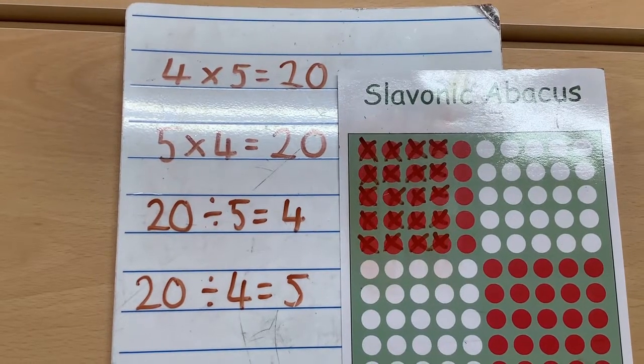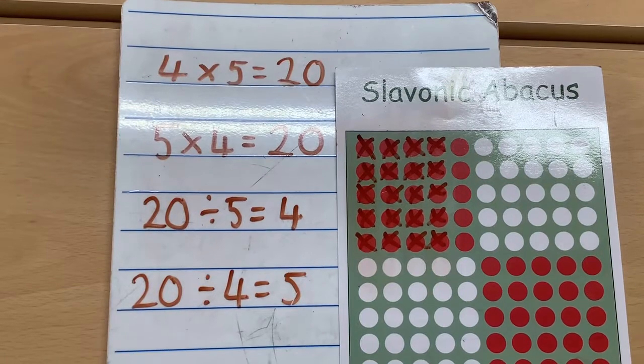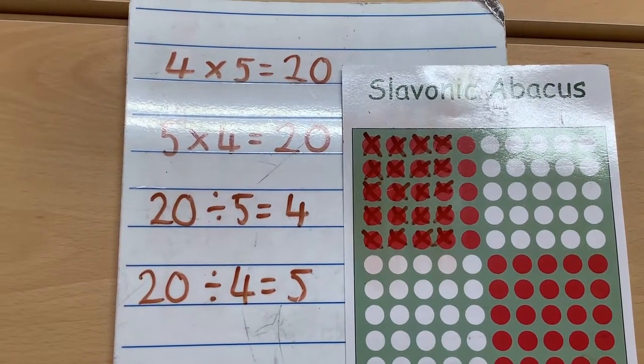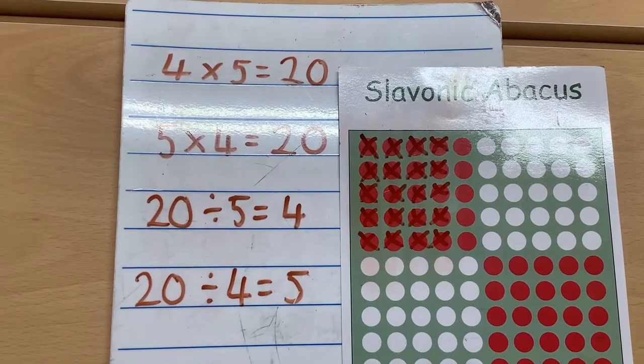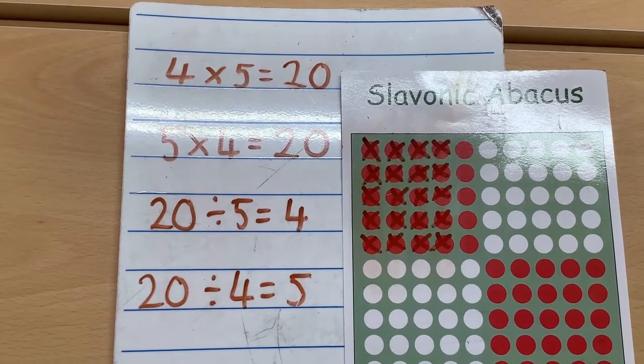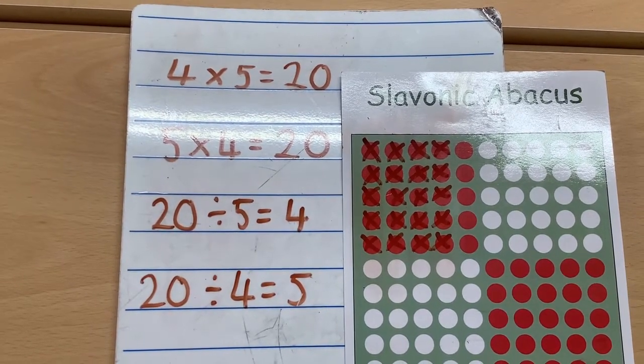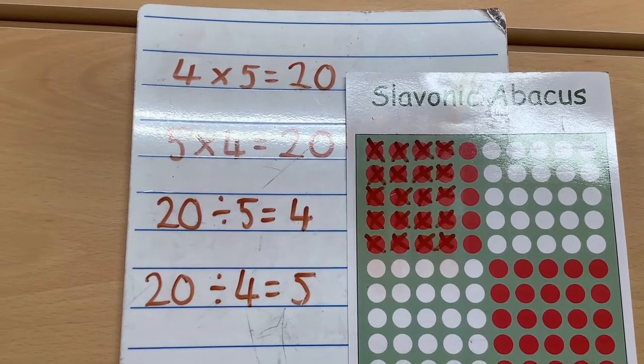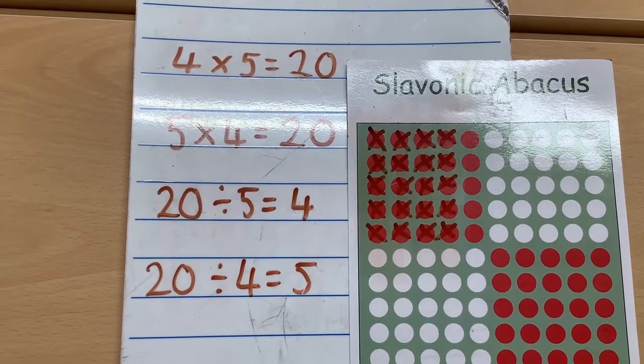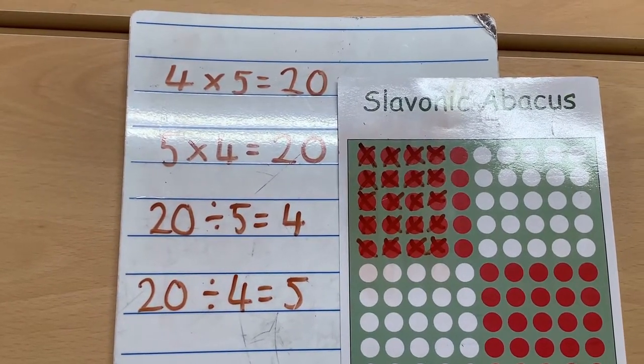So as you can see this time, I started with 4 multiplied by 5 and made my array. And then I moved the abacus around to make 5 multiplied by 4, 20 divided by 5, and 20 divided by 4. And those are the four equations that I have from that one array.